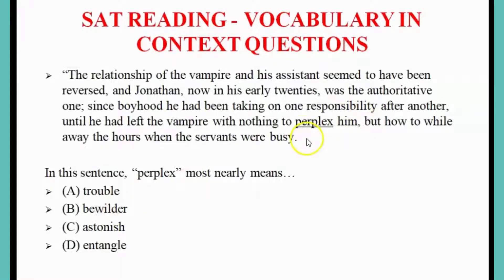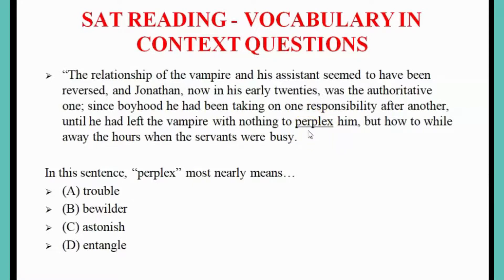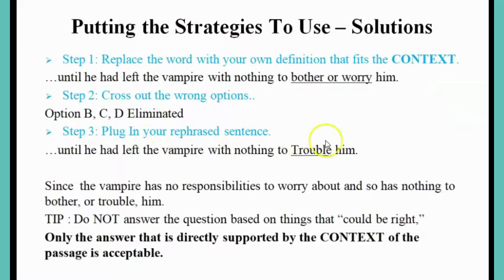So we just eliminate bewilder. Again, astonish would also mean to be shocked, so let's get rid of that answer because it's not close to perplex or to worry. And again, entangle would mean to get caught in a situation where there is no escape — this is also not close to worry, so by the process of elimination you can say that trouble would be the closest answer.